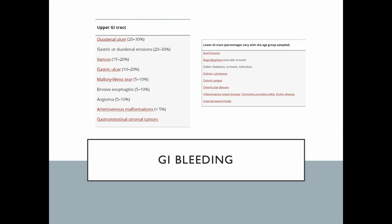In terms of incidence and prevalence in the ICU, about 20 to 30 percent of upper GI bleeds are duodenal ulcers, about 20 to 30 percent are gastric or duodenal erosions, and varices — which are the most problematic to deal with — account for 15 to 20 percent. Lower GI bleeds are not as common in critical care because they're typically not as serious. Things like carcinomas bleed chronically, diverticular disease can be a problem, and hemorrhoids are small bleeders. The big ones are the varices.